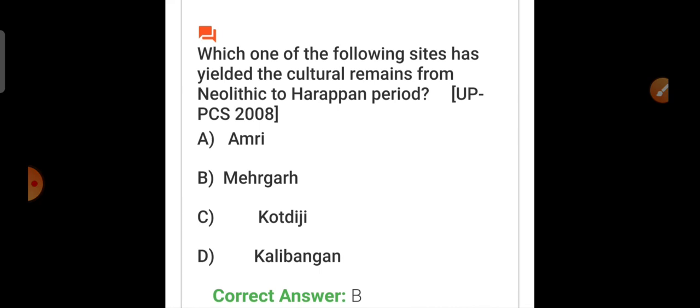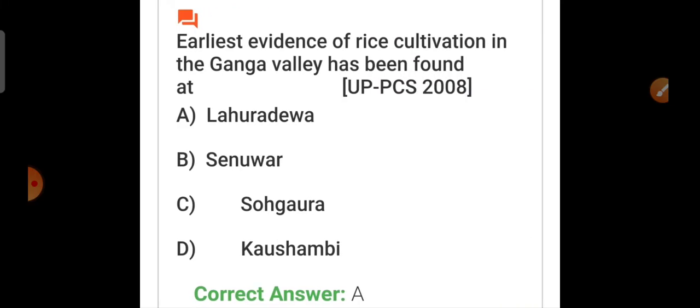Which one of the following sites has yielded the cultural remains from Neolithic to Harappan period? UPSC 2008. Correct answer is Mehrgarh. Earliest evidence of rice cultivation in the Ganga Valley has been found at Lahuradeva, UPPCS 2008.